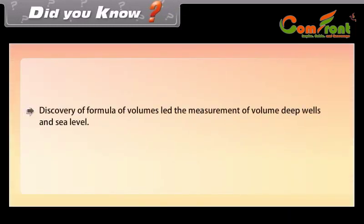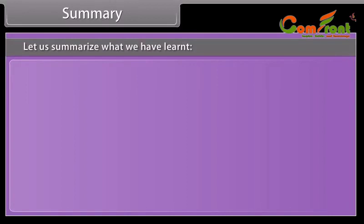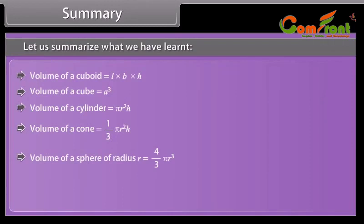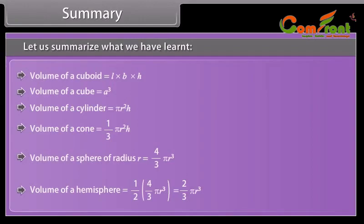Did you know? The discovery of volume formulas led to the measurement of the volume of deep wells and sea level. Summary of formulas: Volume of a cuboid = L × B × H; Volume of a cube = A³; Volume of a cylinder = πR²H; Volume of a cone = (1/3)πR²H; Volume of a sphere = (4/3)πR³; Volume of a hemisphere = (2/3)πR³. Thank you.